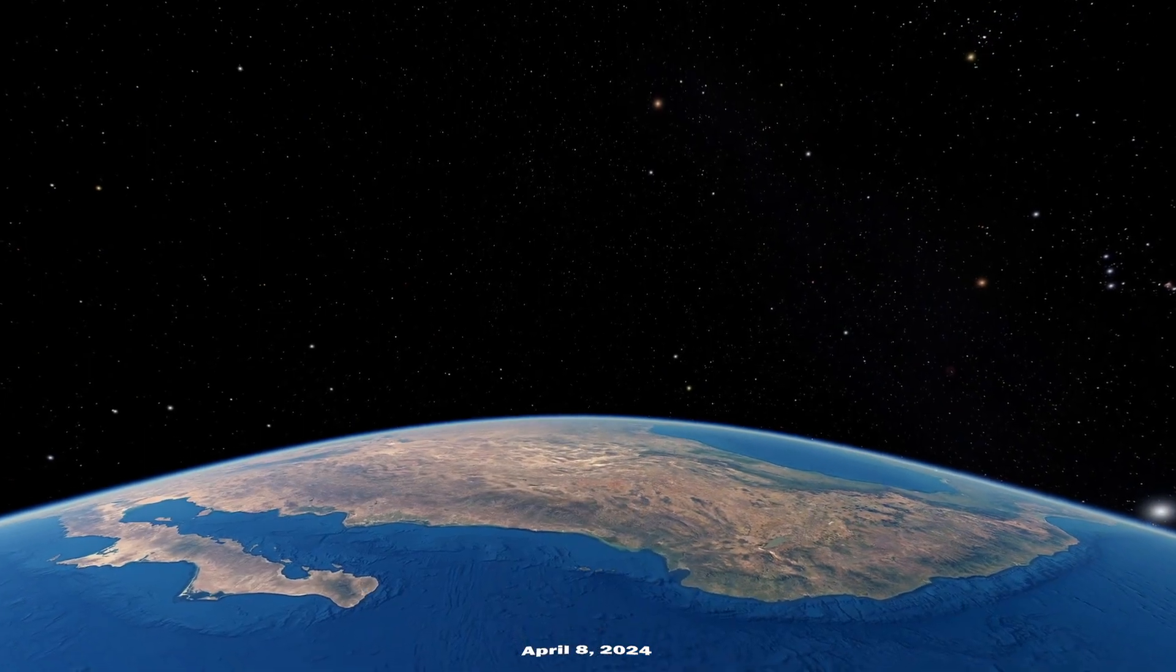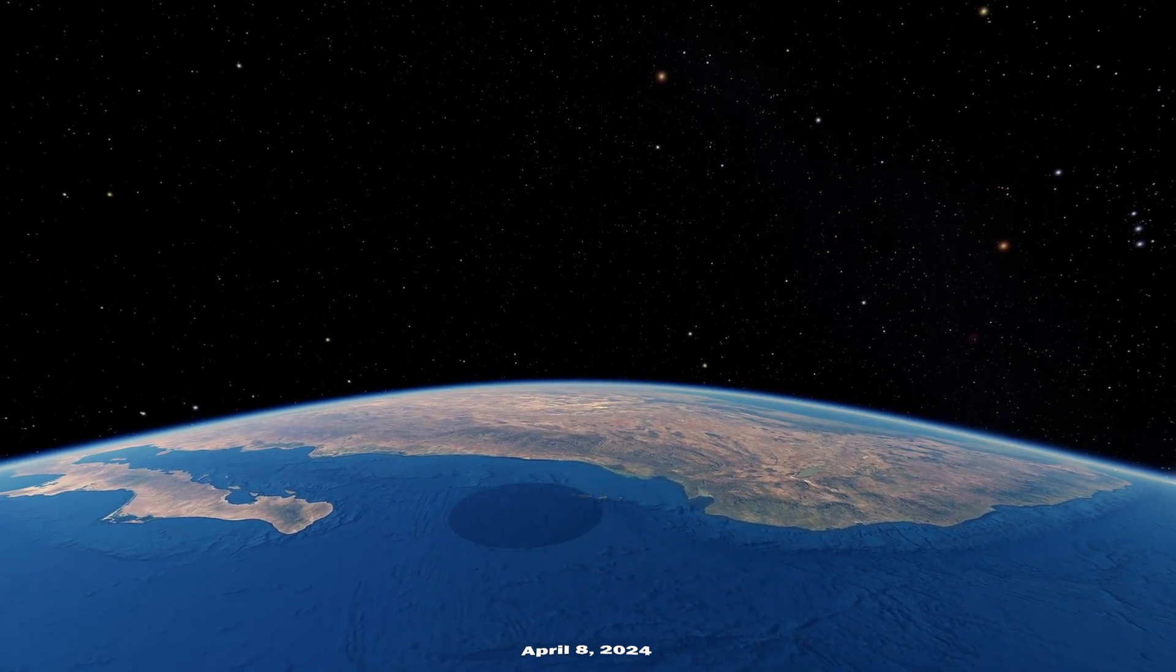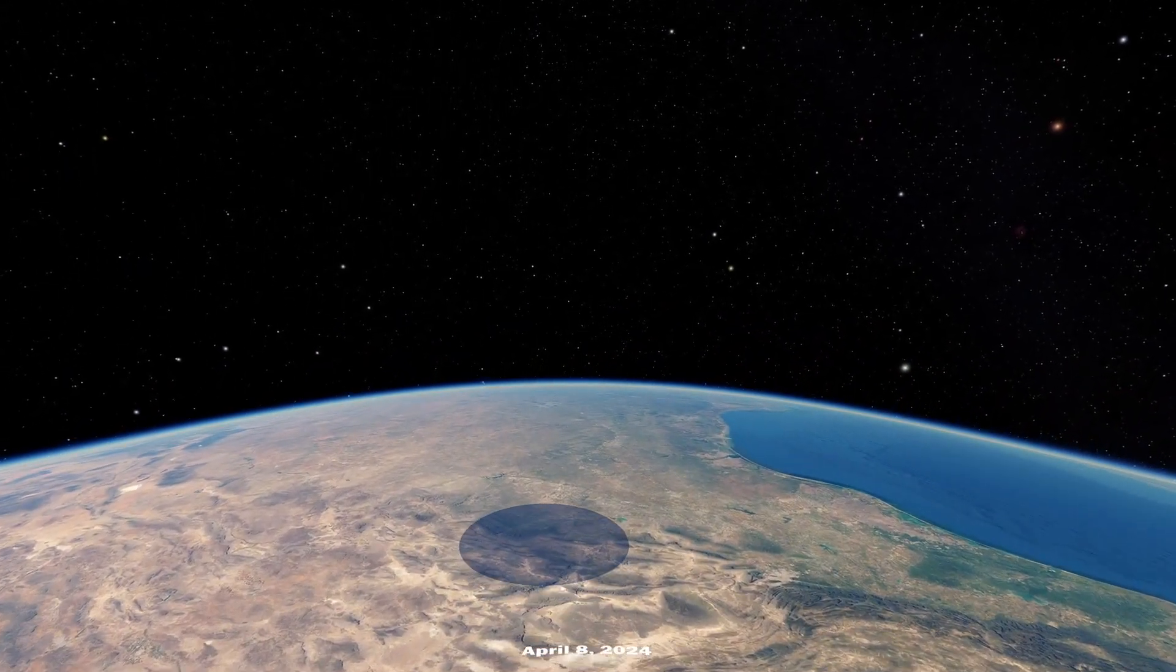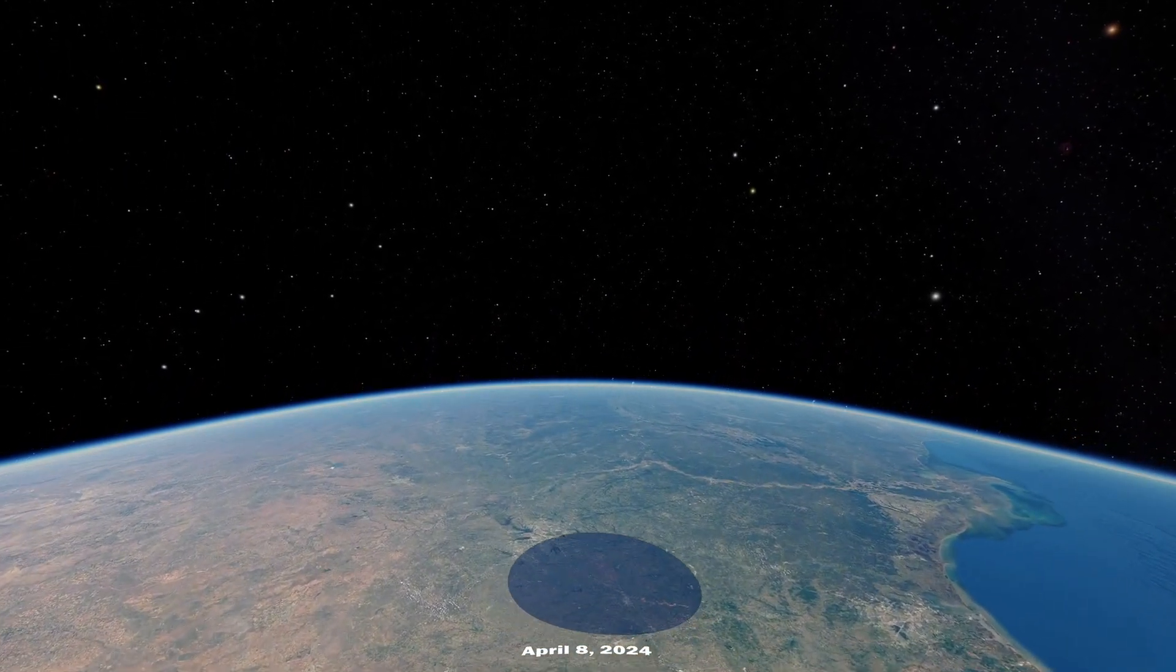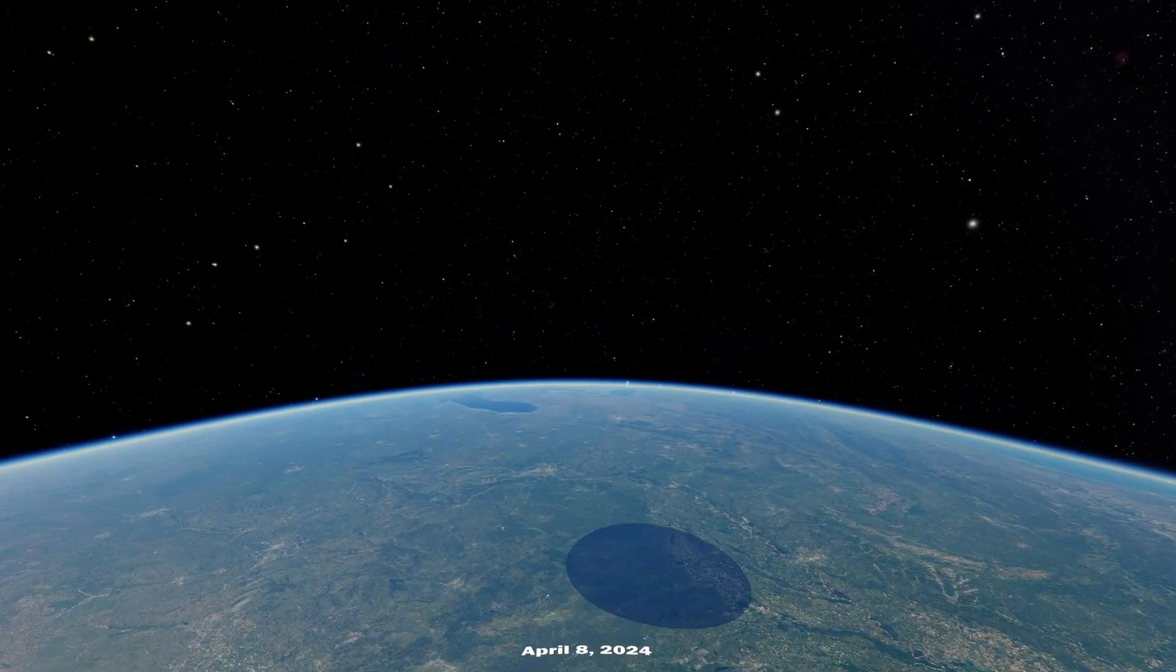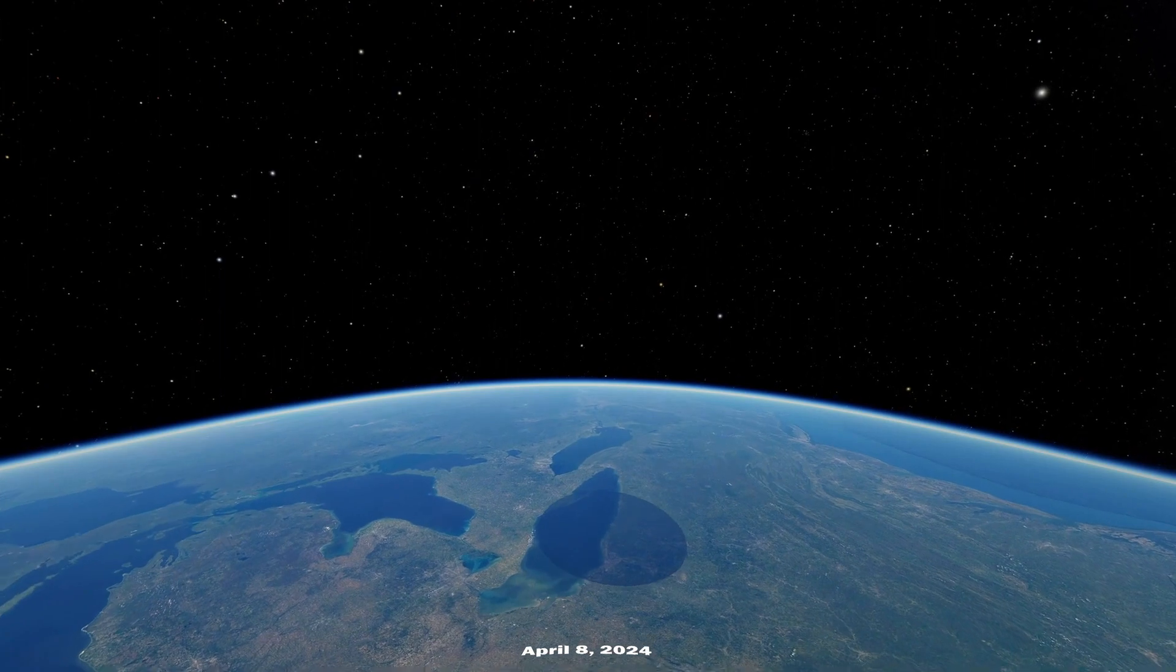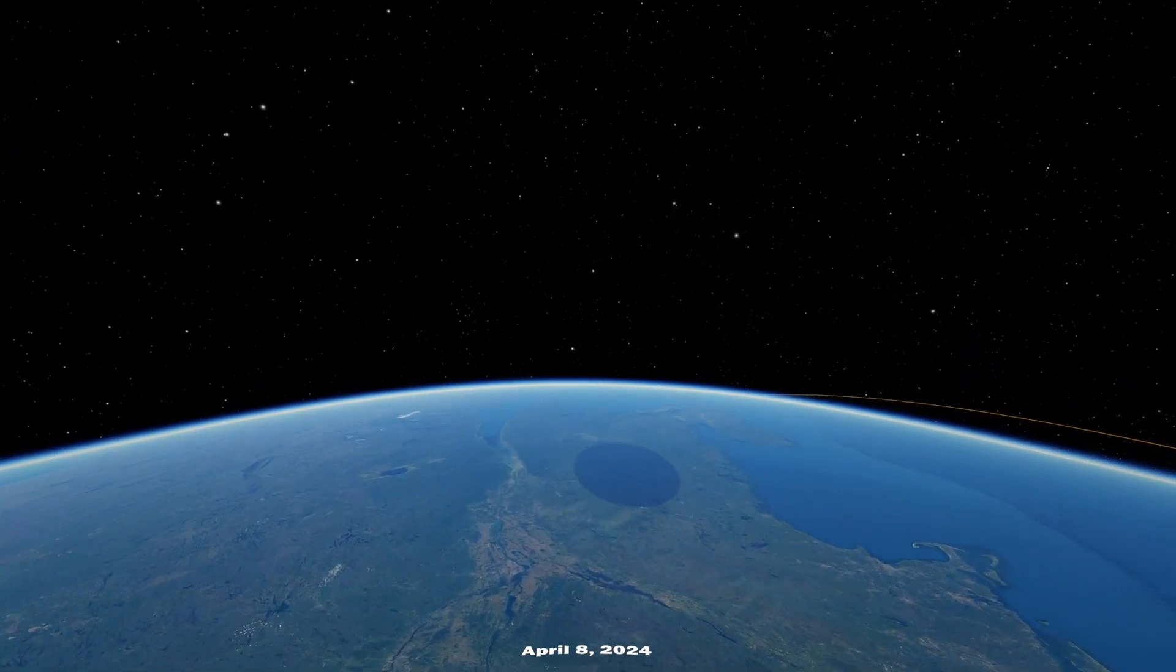The moon's shadow first reaches land at Mazatlan on the Pacific coast of Mexico. The eclipse enters Texas at Eagle Pass, then it crosses San Antonio, Kerrville, Austin, Waco, Dallas, and Fort Worth. The moon's shadow falls on Little Rock, and then Indianapolis. Its path extends east of Lake Superior and Lake Michigan, crossing over Cleveland and Buffalo. In Canada, the eclipse touches Montreal and reaches the Atlantic at Gander and Newfoundland. Over 30 million people lie along this path of totality.